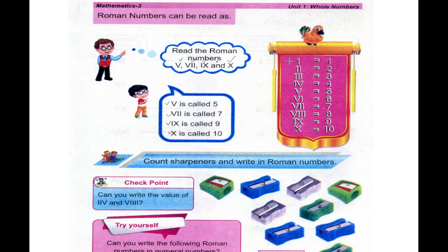Simply, here we will give all the Romans. 1 is I, 2 is double I, 3 is triple I, IV is 4, V is 5, VI is 6, VII is 7, VIII is 8, IX is 9, and X is 10.